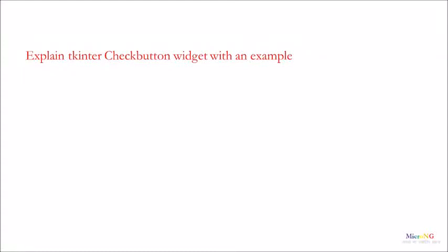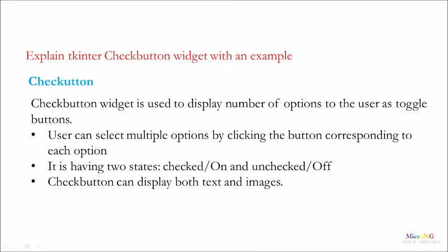Hello, this tutorial is to explain about the Tkinter CheckButton Widget with an example. The CheckButton Widget is used to display a number of options to the user as toggle buttons. The user can select multiple options by clicking the button corresponding to each option. It has two states: checked (on) and unchecked (off). CheckButton can display both text and images.